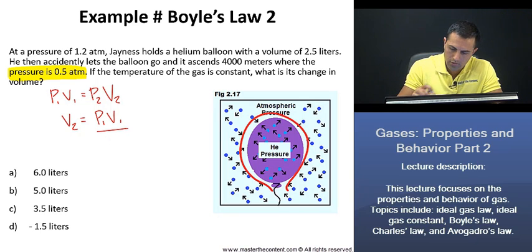Now, excuse me, that should be P2 there. Now, if we go ahead and we plug in our values, we were given P1, that was just going to be right there, right? 1.2 atmospheres.